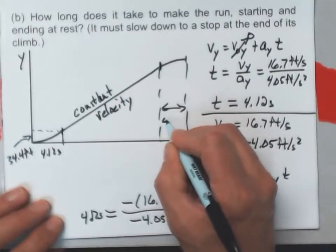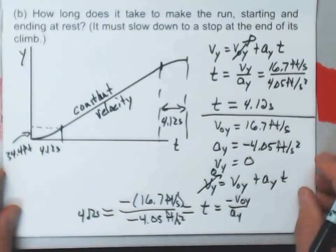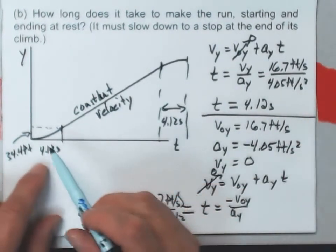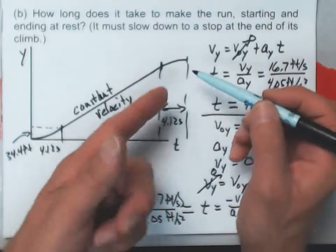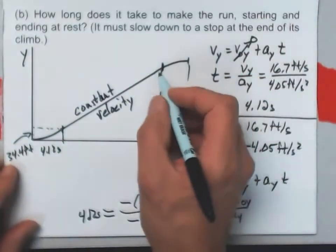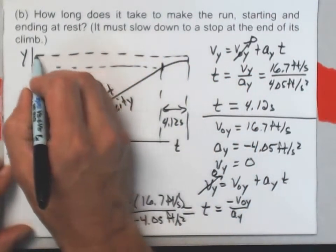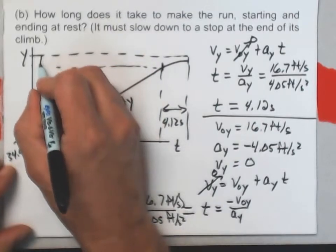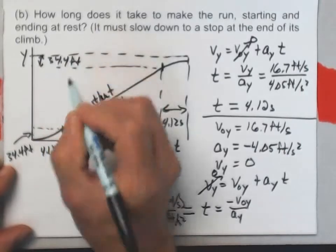So I got the same time interval here. This delta t is 4.12 seconds. You can do a little bit of work and find out that it traveled 34.4 feet in this one. It would also travel 34.4 feet in this interval.